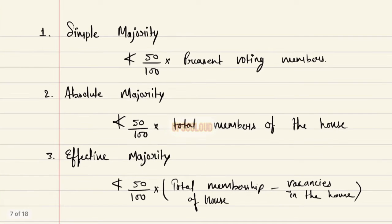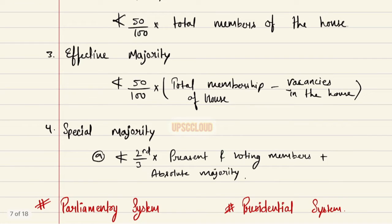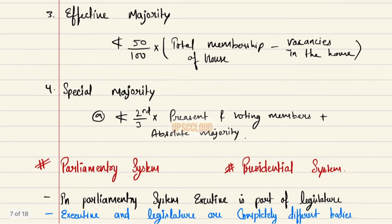Sir had written the simple formula: Simple Majority — not less than 50/100 into present and voting members. Absolute Majority — not less than 50/100 into total members of the house. Effective Majority — not less than 50/100 into total membership of house minus vacancies in the house. Special Majority A — not less than two-thirds into present and voting members, plus absolute majority.